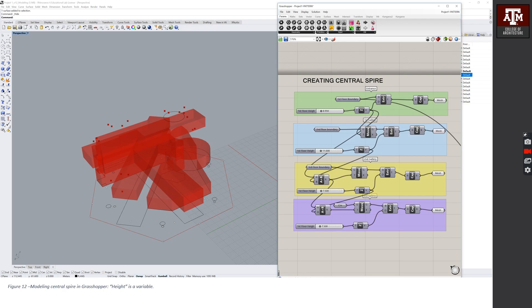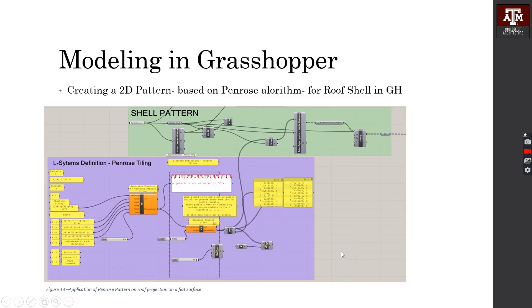I imported the boundaries as input in Grasshopper and defined the height of these galleries as a parameter, so I can change the slider and the height of the building will change. The next step is to create a 2D pattern based on the Penrose algorithm for the roof shell.